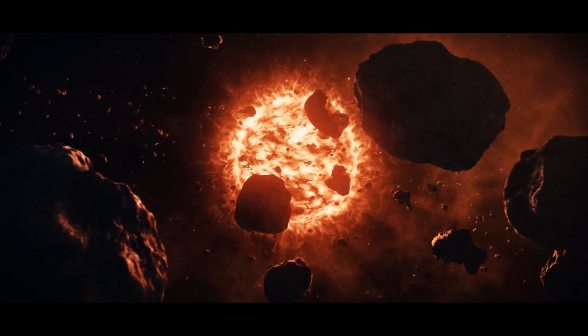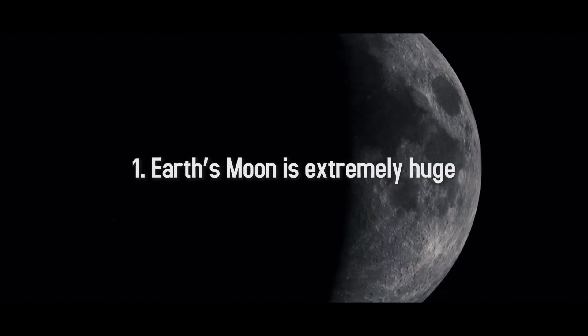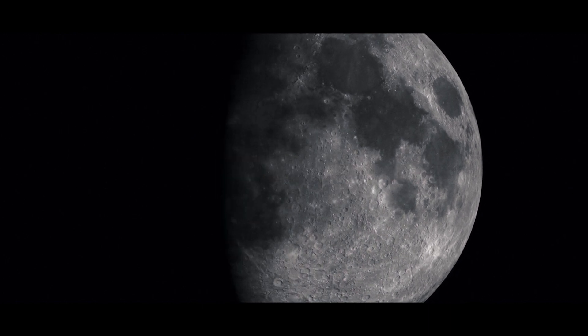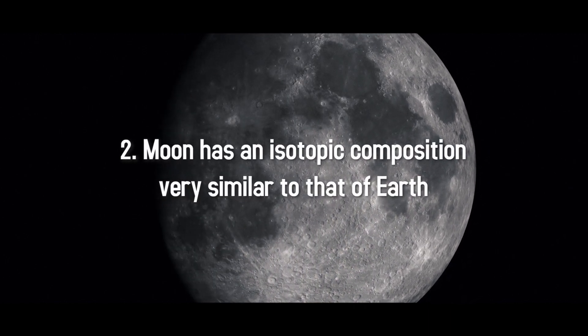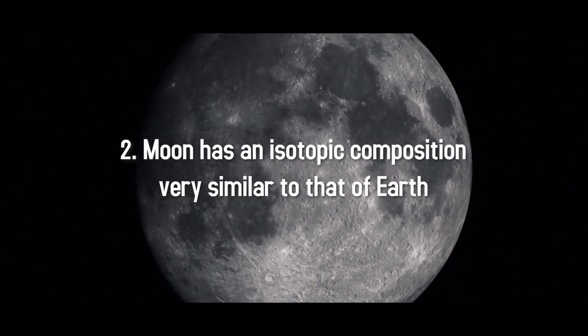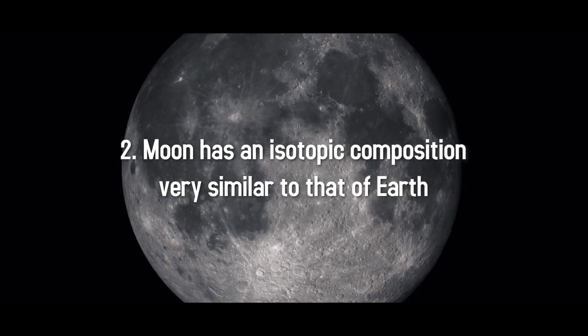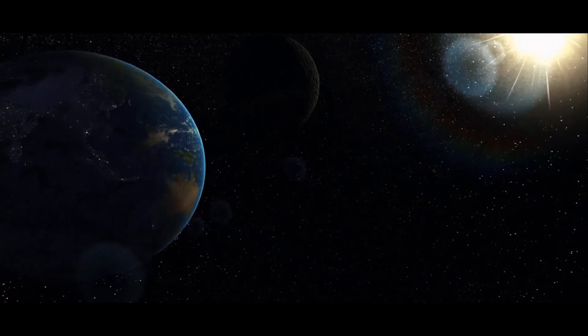Crucial points to note: Earth's moon is extremely huge when compared to other planets' moons in proportion. Analysis of the lunar rocks brought back from NASA's Apollo moon landing missions has shown that our moon has an isotopic composition very similar to that of Earth.